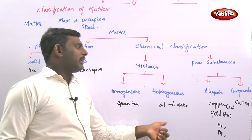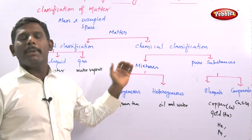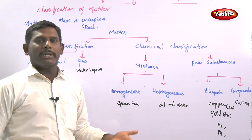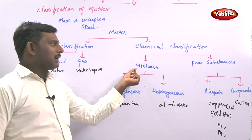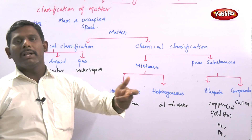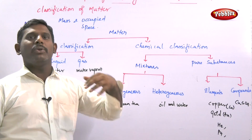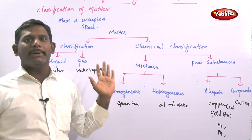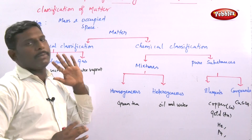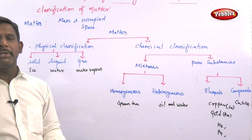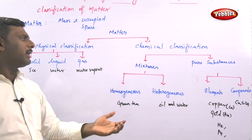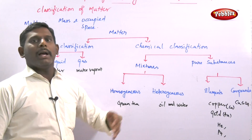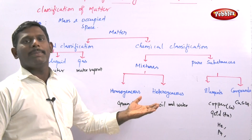Mixture can be further divided into two categories. In terms of the definition of mixture: a mixture consists of more than one chemical entity where there is no chemical interaction between them. That is the statement of mixture. In terms of exam questions, you can write the direct definition.